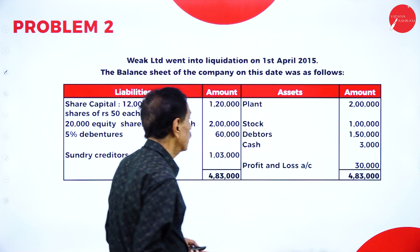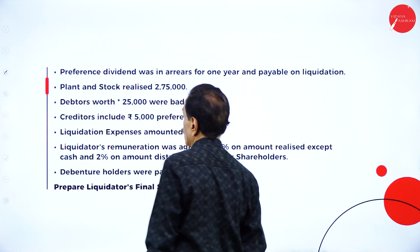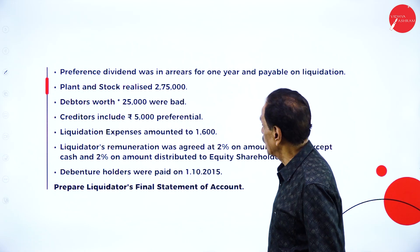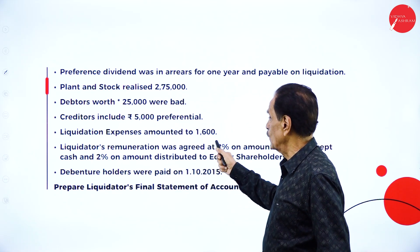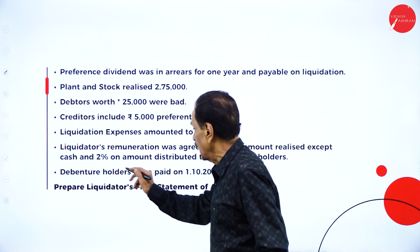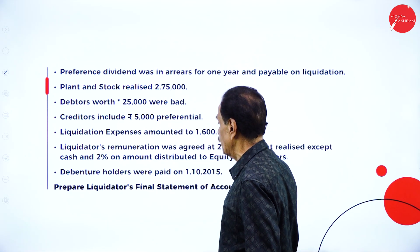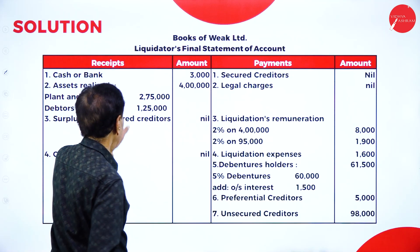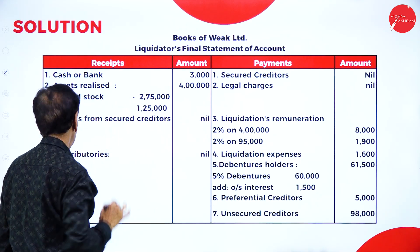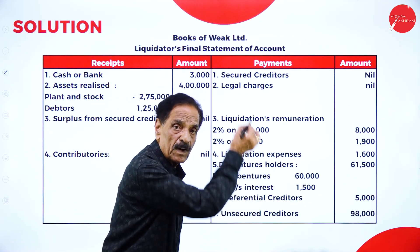Now Problem 2: preference dividend arrears for one year payable on liquidation. Plant and stock realized Rs.2,75,000; debtors realized Rs.25,000 and worth Rs.20,000. Back rate incurred Rs.5,000. Preferential liquidation expenses amounted to Rs.1,600. Liquidation remuneration agreed at 2% on the amount realized except cash, and 2% on amount distributed to equity shareholders. The debenture holder would have been paid on 1st October 2015. Cash and bank: Rs.3,000. Asset realized — plant and stock Rs.2,75,000 and debtors Rs.1,25,000 — totally Rs.4,00,000 has been realized.